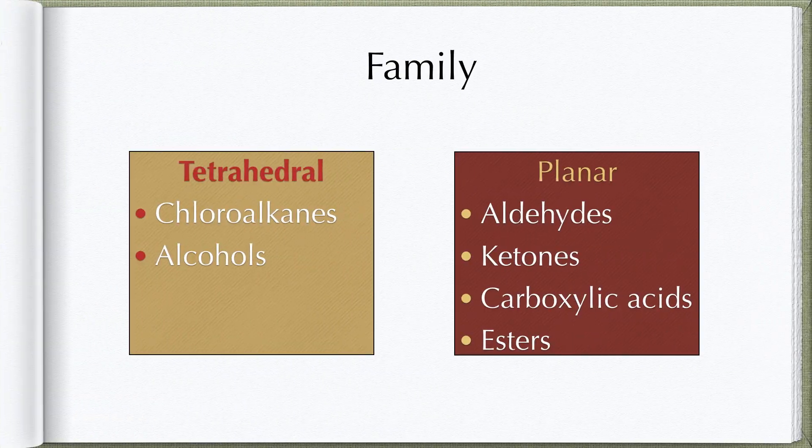The two categories depend on shape — whether they are tetrahedral or planar. Chloroalkanes and alcohols are tetrahedral, whereas there are four planar families. You do need to know all of these. In your exams, you are asked about their properties, how to name them, and their uses.